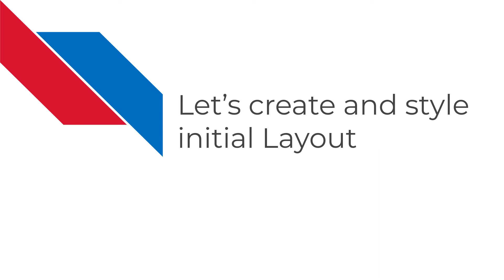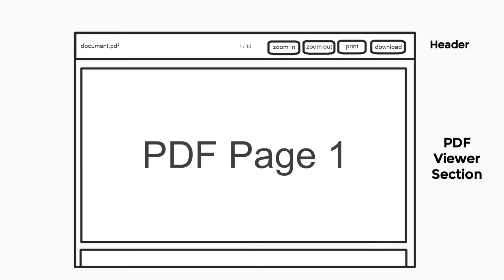In this section, we are going to create and style the initial layout of the project. The header consists of the file name, page indicator, and functionality such as zoom in, zoom out, print, and download. Below is the PDF viewing section, which is displayed page-wise.